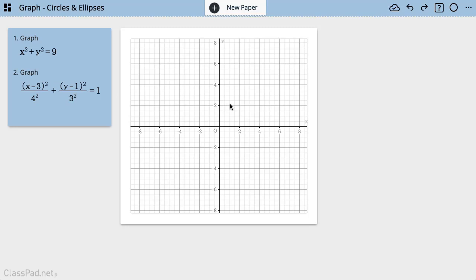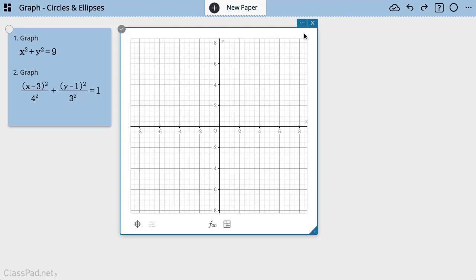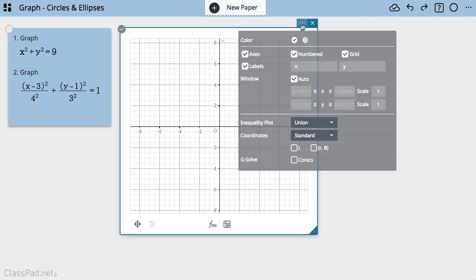And I have my graph sticky icon here. Now before I get started, because we are looking at graphing circles and ellipses, really we're talking about graphing things and looking more at conic sections. So when I click on my graph sticky note, I'm gonna go to the settings which is in the upper right hand corner. And now the very last thing here is G solve.